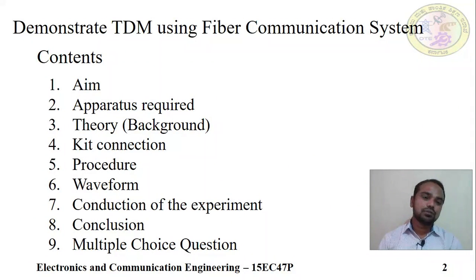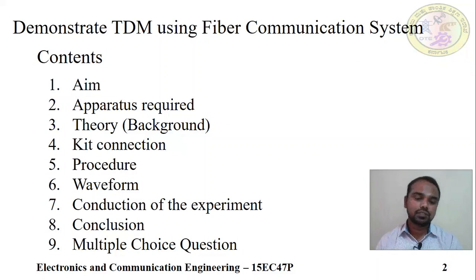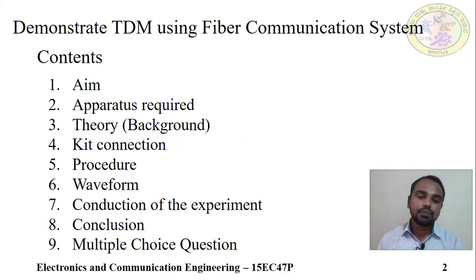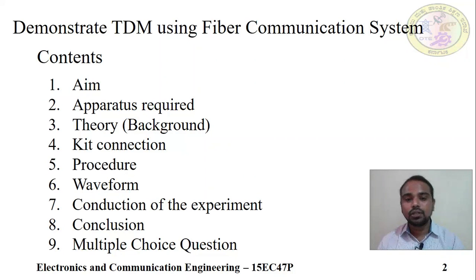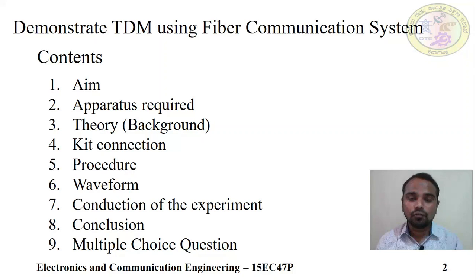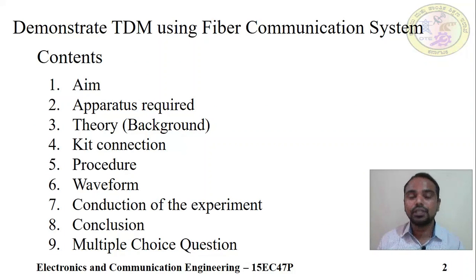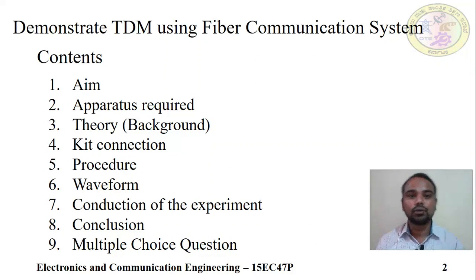Let us begin with the content. The content has a total of 9 points. First, we will discuss the aim. Then apparatus required and the equipments and components. Then theoretical background — before going into the practical execution, we must know the theoretical concept. Once we understand it thoroughly, then only we can appreciate its practical aspect. In order to conduct the experiment effectively and flawlessly, we need to know the theoretical concept.